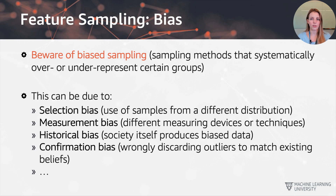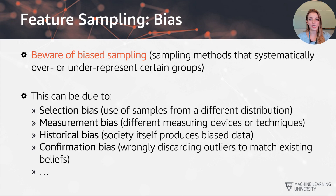Secondly, you can suffer from measurement bias: if you have different devices taking the measurements, they might produce different results. If you want to record in two different regions, those regions should have access to the same measurement device or method. Thirdly, more related to data from the wild or data that's already been recorded, there is historical bias. Society itself can be biased, so any data we scrape or take without doing our own sampling may exhibit historical bias, and we may not know what the selection was.